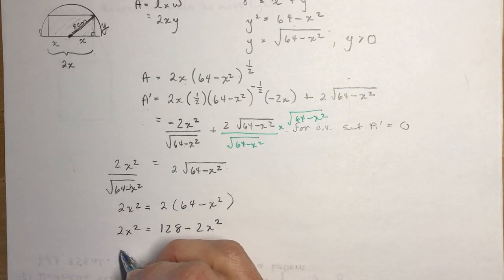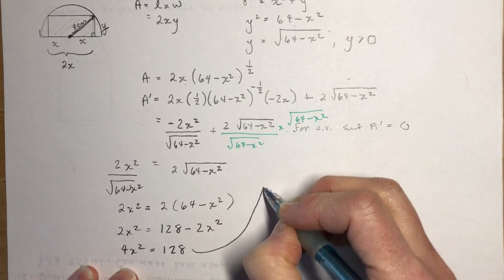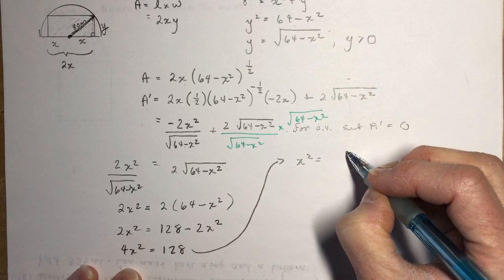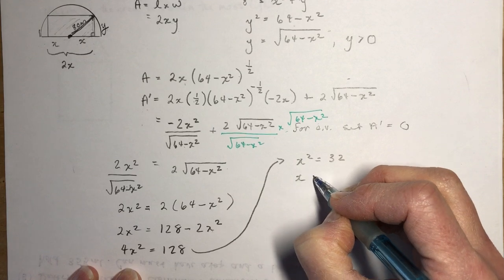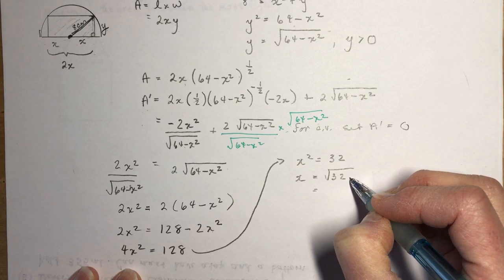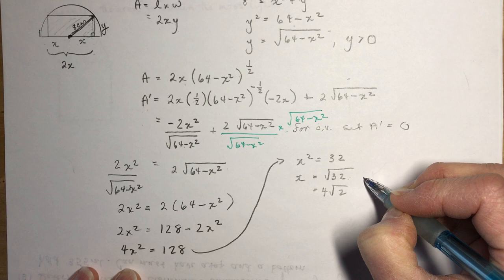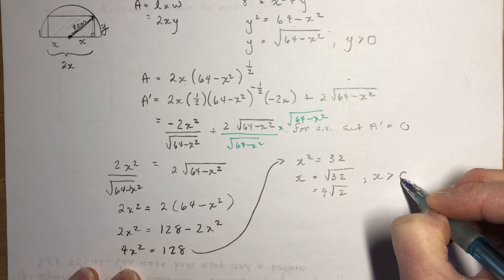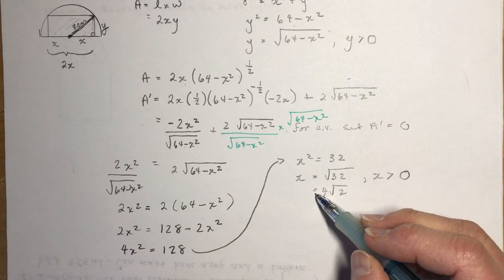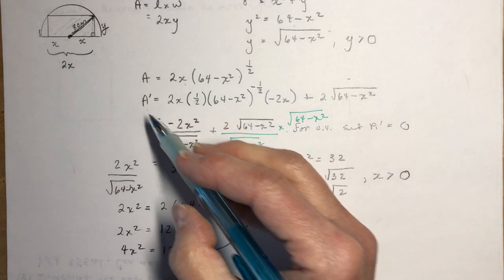Bringing like terms together: 4x² = 128, so x² = 32 and x = √32 = 4√2. We only take the positive value since the length must be greater than zero.